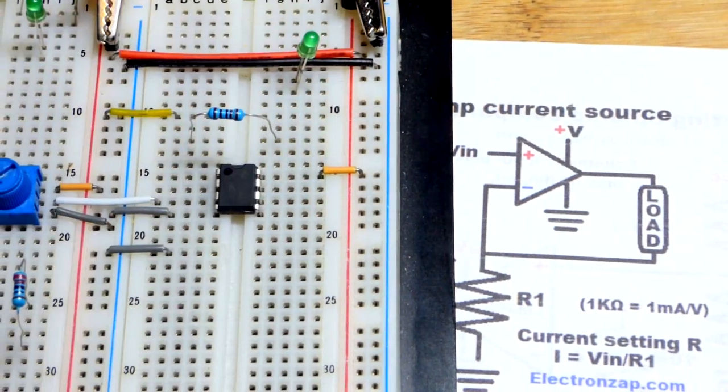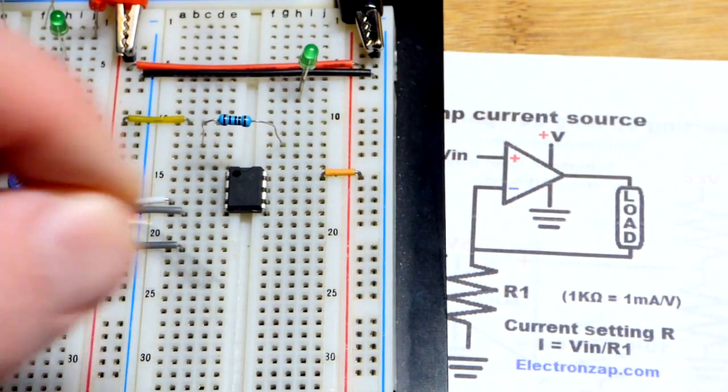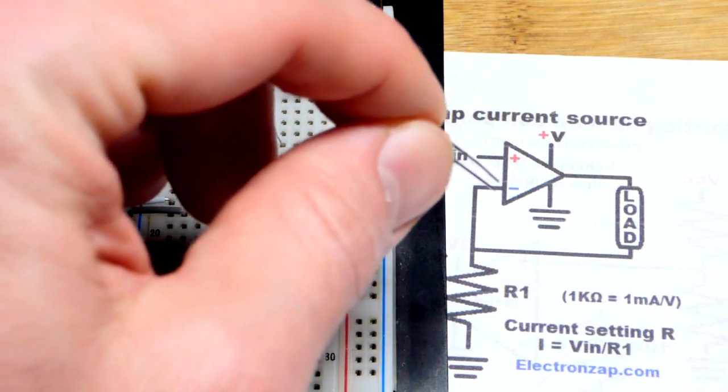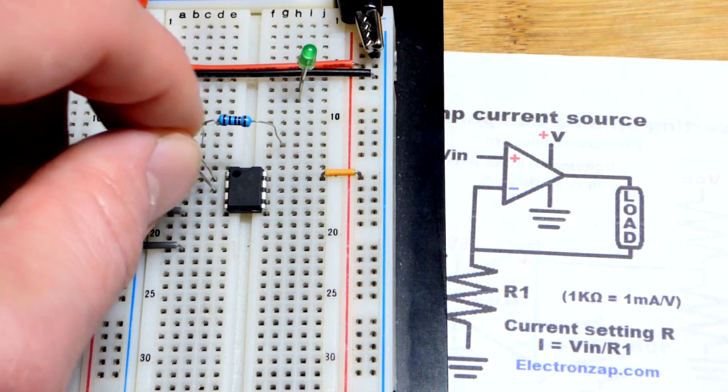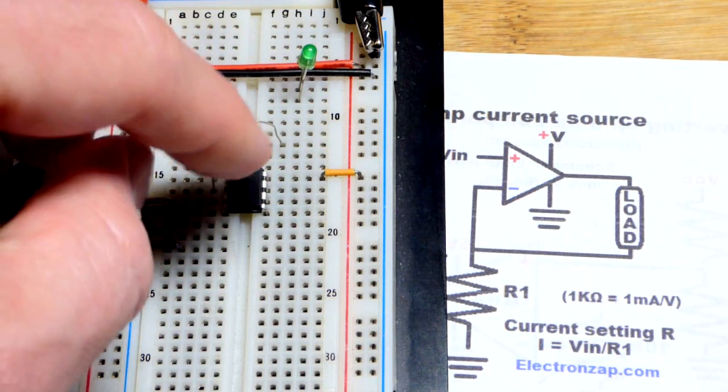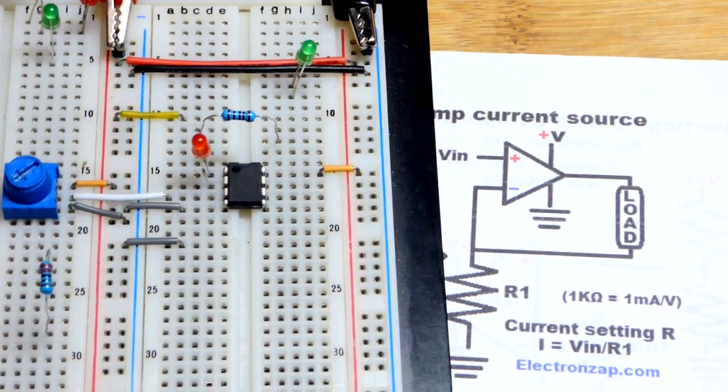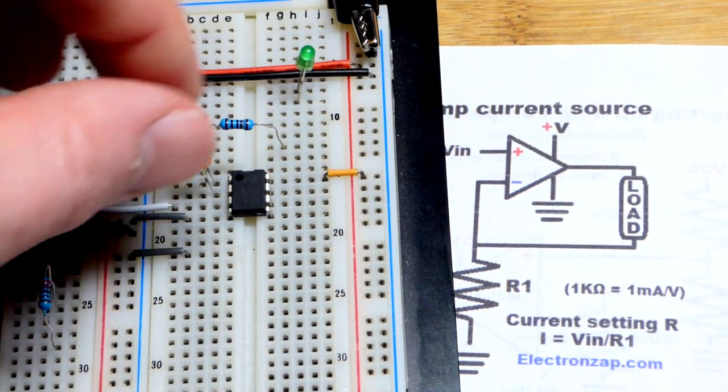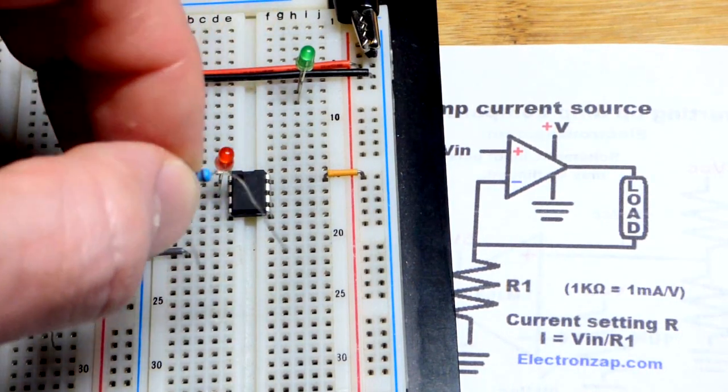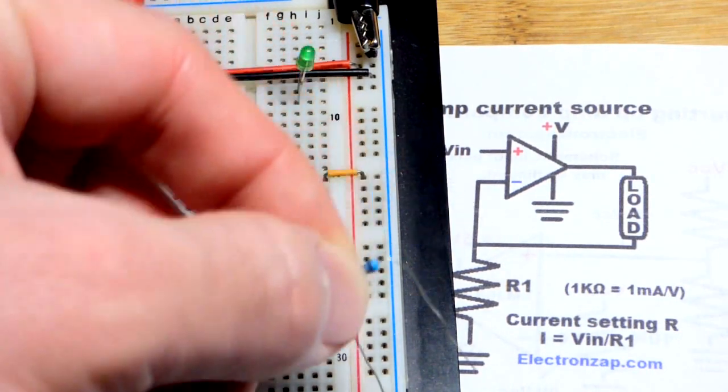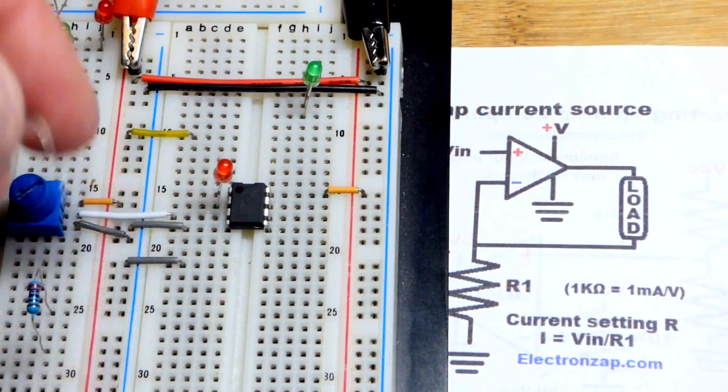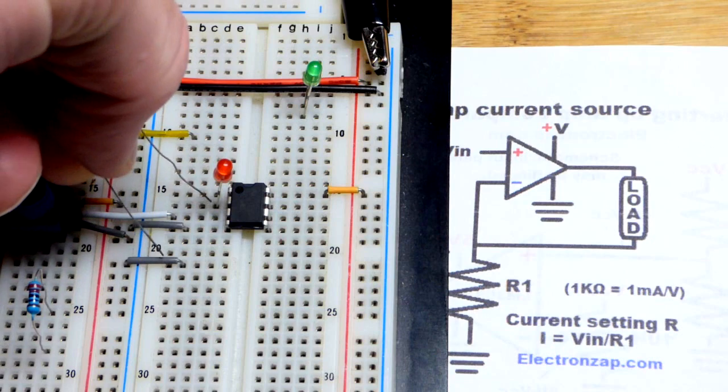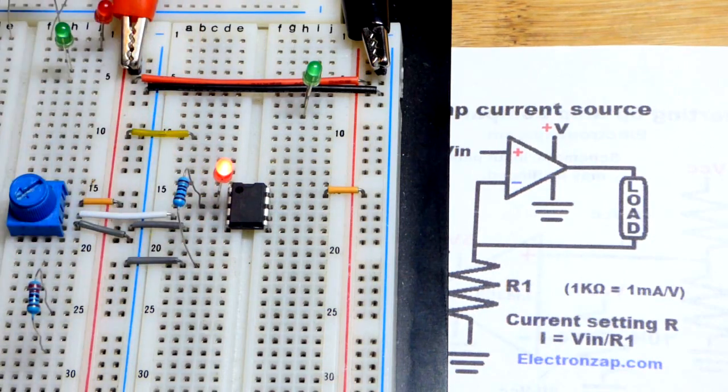All we have to do now is take, as a load, an LED. Remember, the output is the top pin and the inverting pin is second pin down. Output is pin number one and the inverting input is pin number two. Then we'll grab our one kilo-ohm resistor and put that from the inverting input to this jumper here that goes to the negative rail. And that's literally all we have to do.